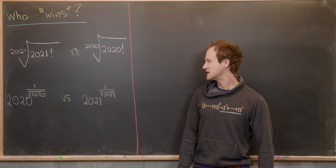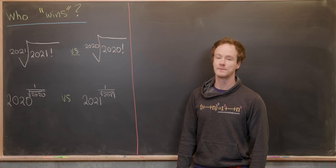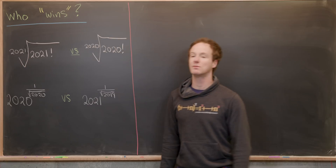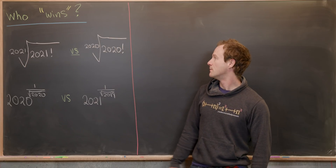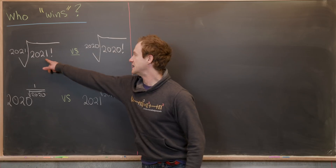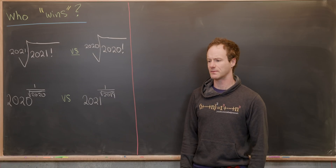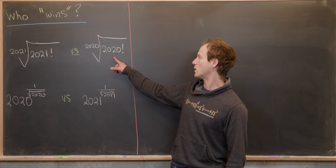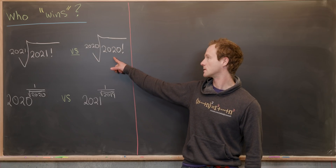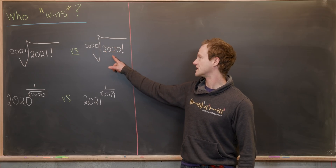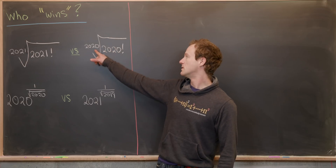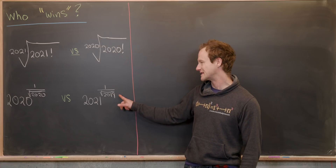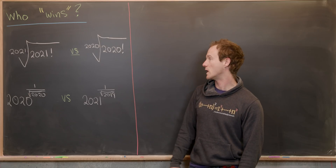These comparisons are not super clear because a larger root produces a smaller number, but a larger number on the inside produces a larger number. So one thing is pushing this one larger and one thing is pushing this one smaller. The fact that 2020 is on the inside is pushing it smaller, but the 2020th root is pushing it larger — and you have the same kind of tension in the second question.